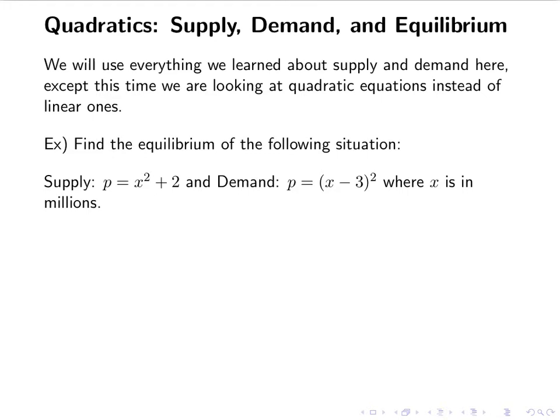For supply, I can think of that as either the standard form of a quadratic or the vertex form. For the demand, you want to see that as vertex form. So if we want to make things easier, we can think of them both as being in vertex form. For the equilibrium, remember that is when our supply equals demand, so we set them equal to each other. Now in order to solve this, we need everything on one side — 0 on one side, everything else on the other — but we also need to FOIL out our quadratic.